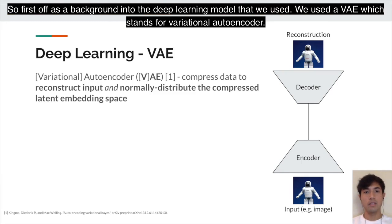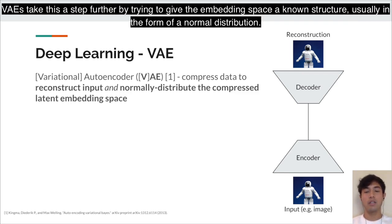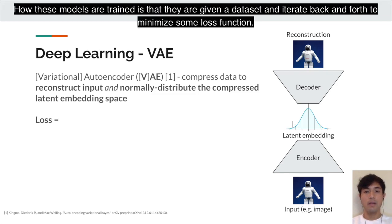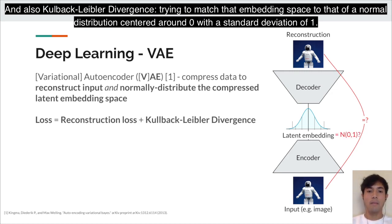As background on the specific deep learning model we used: we used a VAE, which stands for Variational Autoencoder. Basic vanilla autoencoders encode data into a smaller compressed representation and then decode it to generate a reconstruction of the input. VAEs take this further by giving the embedding space a known structure, usually in the form of a normal distribution. These models are trained by minimizing a loss function consisting of reconstruction loss — matching the reconstruction to the input — and KL divergence, trying to match the embedding space to a normal distribution centered around zero with a standard deviation of one.